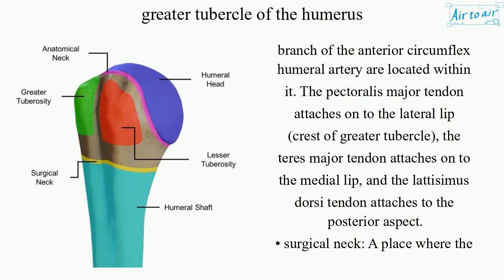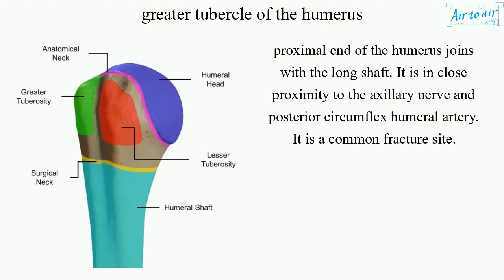The surgical neck is the place where the proximal end of the humerus joins with the long shaft. It is in close proximity to the axillary nerve and posterior circumflex humeral artery, and it is a common fracture site.